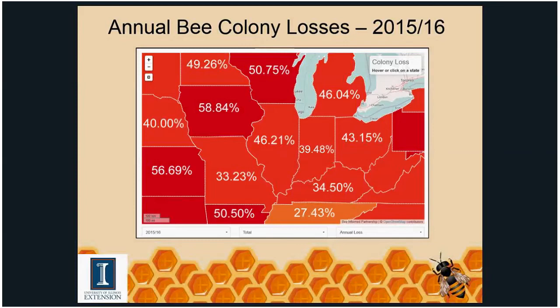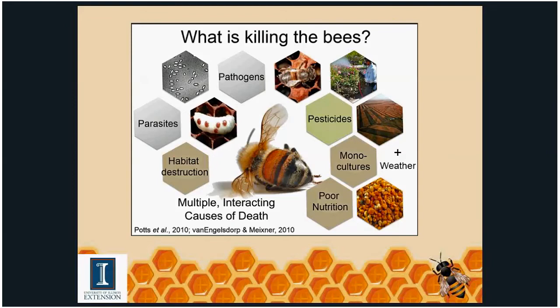Over the past 20 years, researchers have identified a variety of things killing our bees: parasites like varroa mites, habitat destruction — the countryside in central Illinois is very productive for corn and soybeans but nearly sterile for bees, who can really only collect pollen during corn pollination. They have poor nutrition, diseases, harsh winters or cold springs, and some of our new pesticides. All of these are working against our bees.